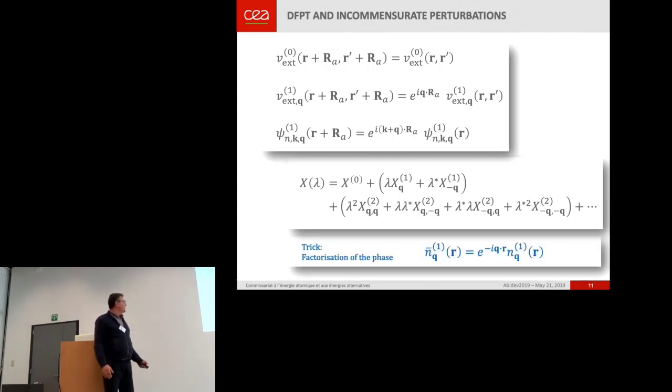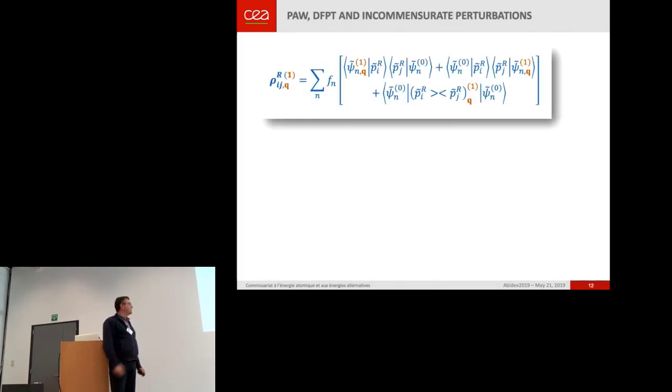And you have this expansion with respect to the perturbation, including the Q vector. And this famous trick of the phase factorization. You can handle some phase. You can handle quantities once you have factorized a phase. And they have a Q index. And they have a phase. So they become complex.